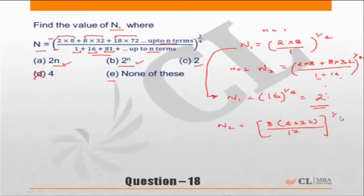Which is nothing but 8 into 34 by 2, raised to power 1/4. I am sorry - 8 into 34 upon 17. Now 17 ones are 17, 17 twos are 34, which is 16 to the power 1/4.